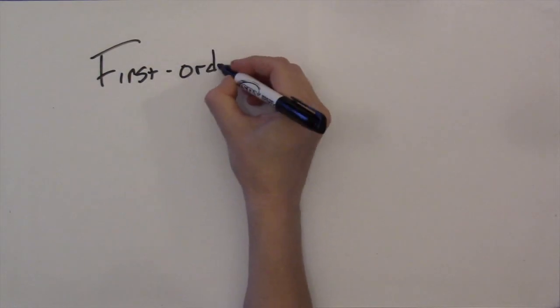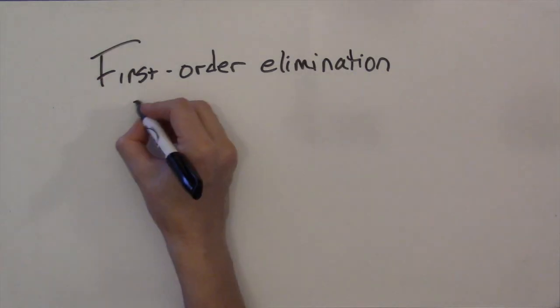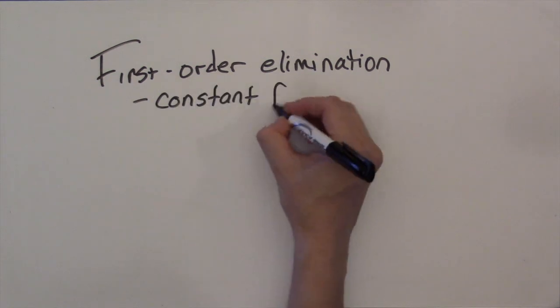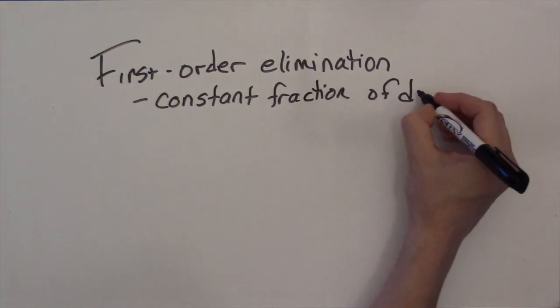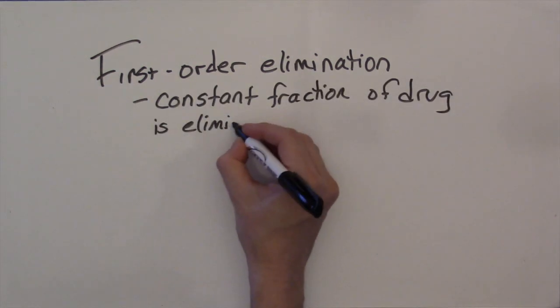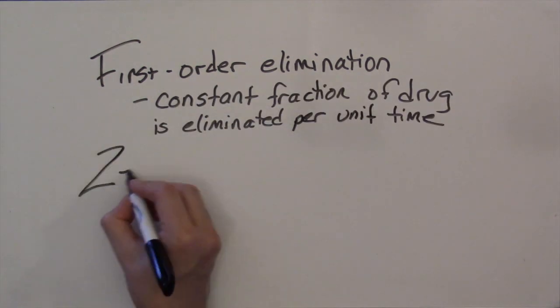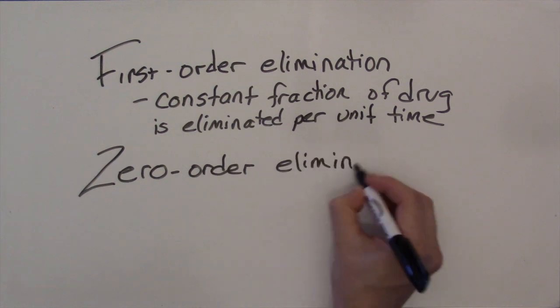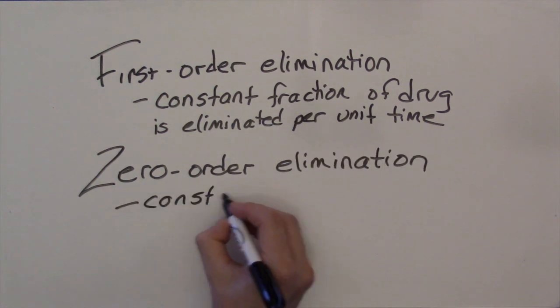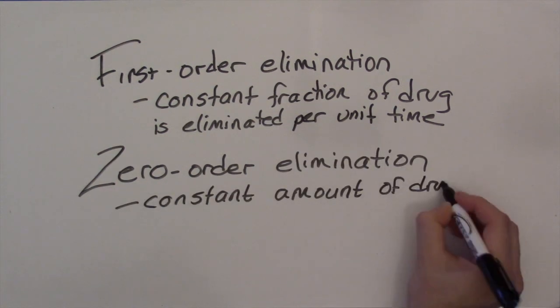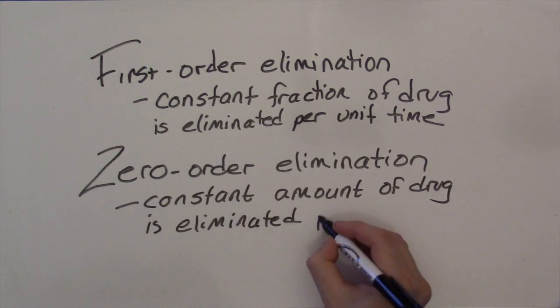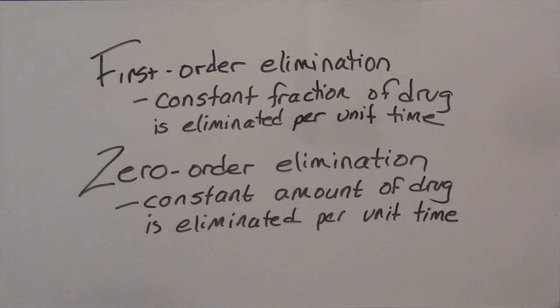Remember, for first-order kinetics, a constant fraction of the dose is eliminated per unit time, and for zero-order kinetics, a constant amount of the drug is eliminated per unit time.